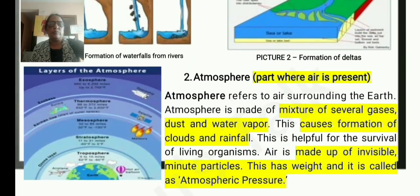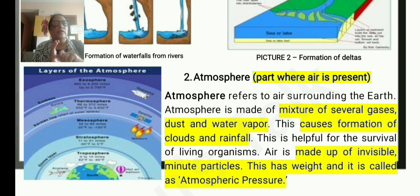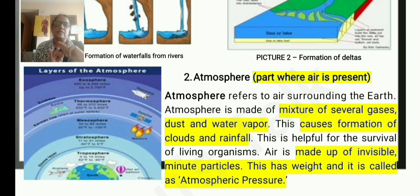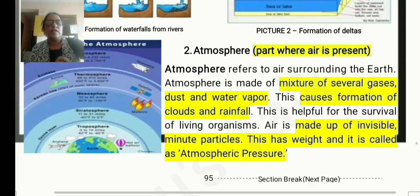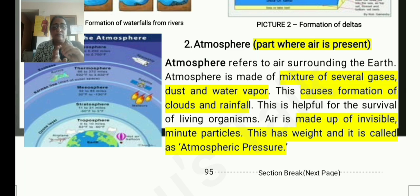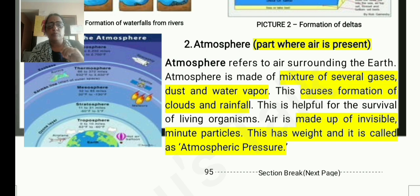It is about the atmosphere. The air surrounding the earth is the atmosphere. It is made up of several gases, dust, and water vapor, which causes the formation of clouds and rainfall. It is made up of invisible minute particles and has weight, which is also called atmospheric pressure.